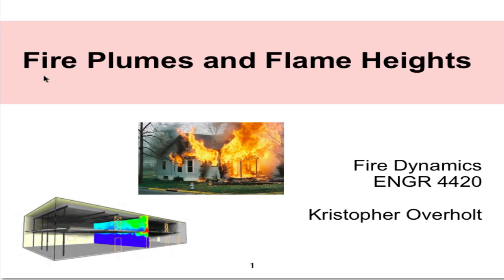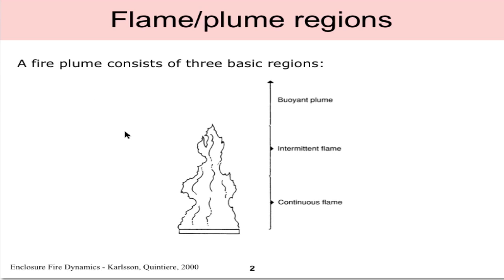We start with the definition of a fire plume which consists of three basic regions. Near the bottom where the fuel is burning, in this case it could be a liquid pool fire of diesel or kerosene, we have the continuous flame region where, as the name suggests, the flame is continuous in this area.